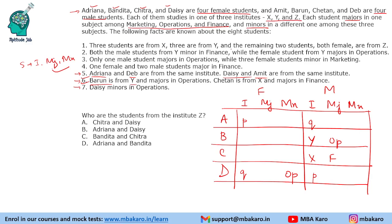It says 3 from X, 3 from Y, and the remaining 2 students — both female — are from Z. We already have 1 person each from Y and X. These have to be different institutes. Since both remaining female students must be from Z, if we try to put any male in Z it creates a contradiction. So this clearly means these 2 female students are from Z, and no male students are from institute Z.